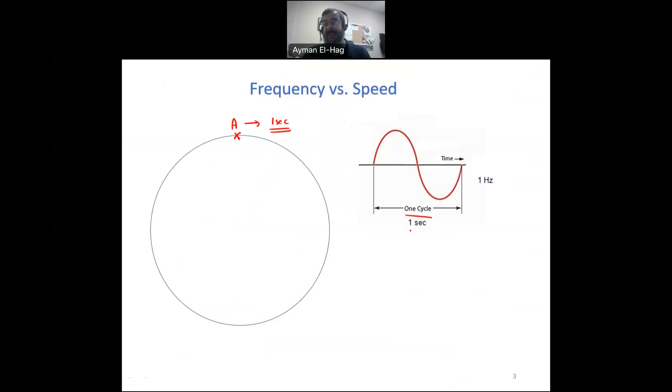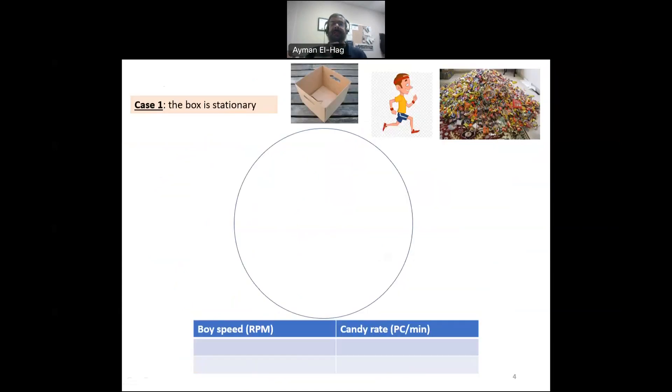And that one cycle is in one second. And we see that the frequency is 1 hertz. So when you do one revolution per second, the frequency you are getting is 1 hertz. If you increase the speed and you do two revolutions per second, then the speed is 2 hertz and so on. The faster you try to rotate, the higher the frequency that you will have. So we can say that the frequency and the speed, they are proportional to each other.